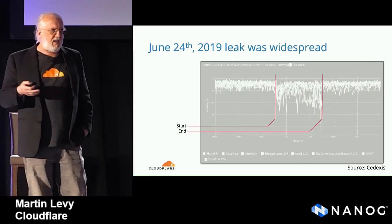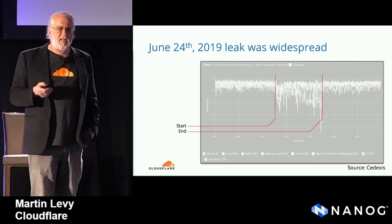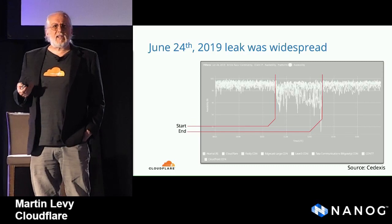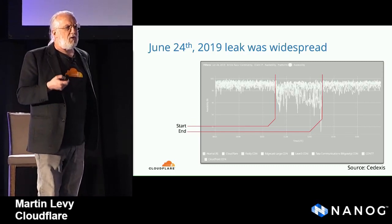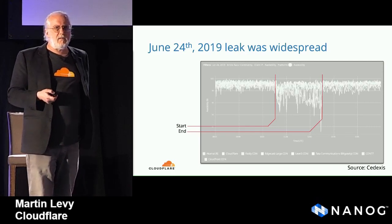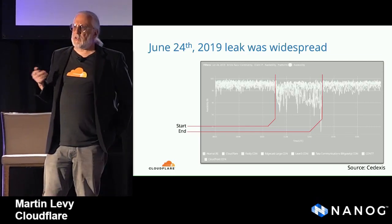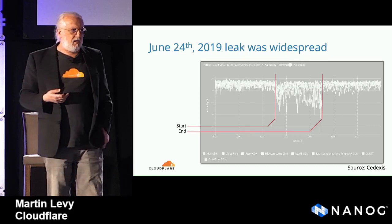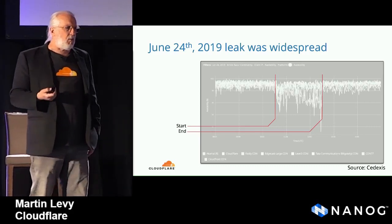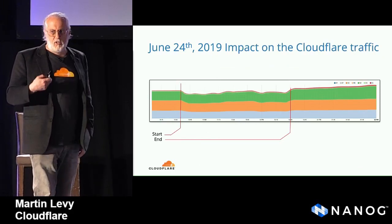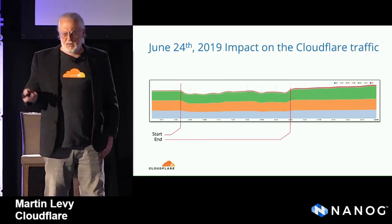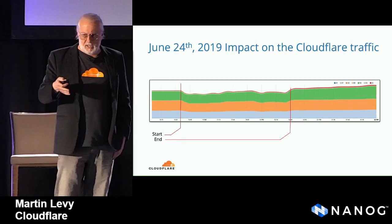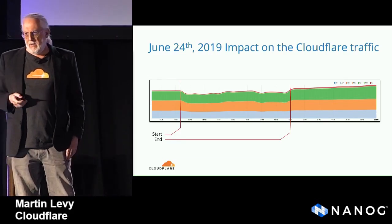It started, it affected traffic. This is a graph from Sodexis — a company that measures content delivery network performance — and absolutely, as this route leak occurred, the performance of Cloudflare deteriorated. It had a known start and a known end. When this happened we got as many alerts as you'd expect, and we had to deal with it fairly quickly. It affected our traffic — here's an internal graph with no y-axis, but it started going down, continued, and when it ended, it came back up again. We were down for that period of time.